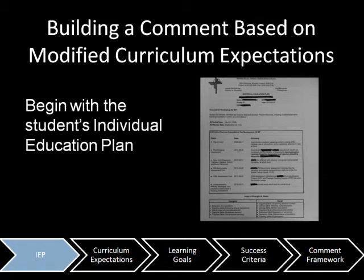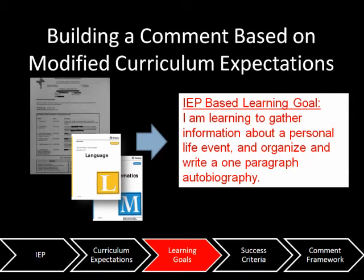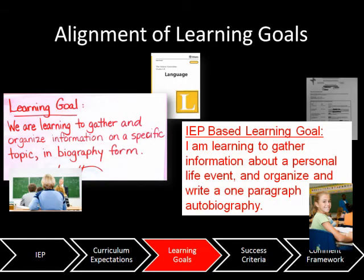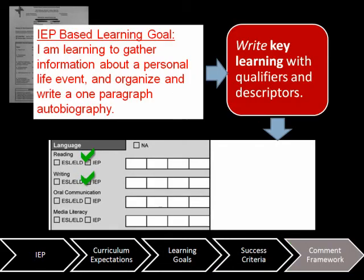The basis for our comment is the IEP developed for this particular student by the school-based team. From the IEP, we identify the curriculum expectations that we previously selected and have been working on this term. The expectations form an IEP-based learning goal: 'I am learning to gather information about a personal life event and organize and write a one-paragraph autobiography.' We align the IEP-based learning goal with the whole class learning goal but personalize it to meet this individual student's learning needs. Success criteria is developed in student-friendly language based on this learning goal. To write the first part of the comment, we take this student's IEP-based learning goal as the basis of their key learning.